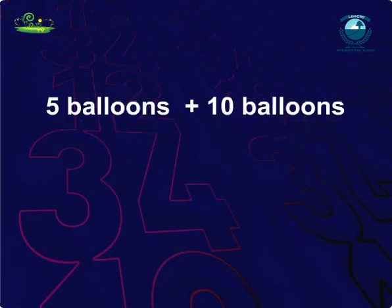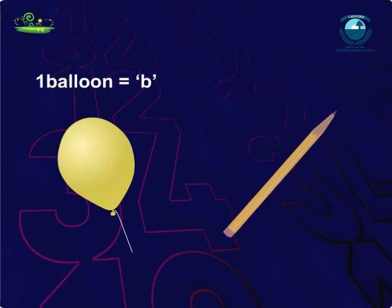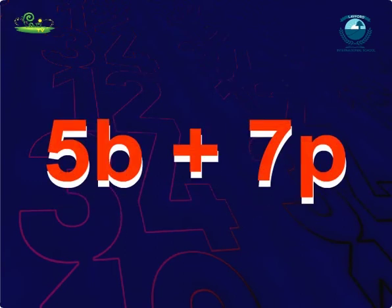The statement can be written as 5 balloons plus 10 balloons is equal to 15 balloons. And if we take b as balloons and p as pencil, then the two expressions can be described like this. They are not the same kind of objects, so they cannot be added. 5b plus 7p is equal to... they are unlike.